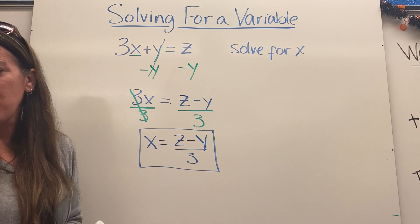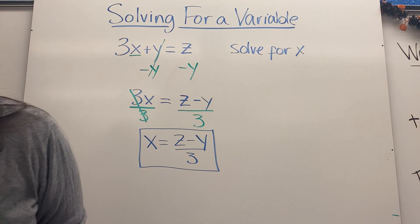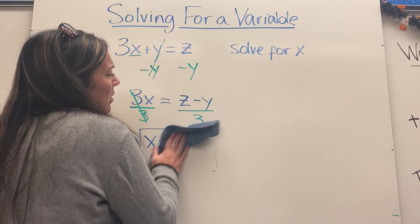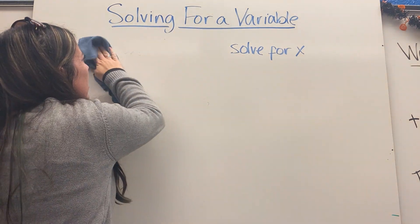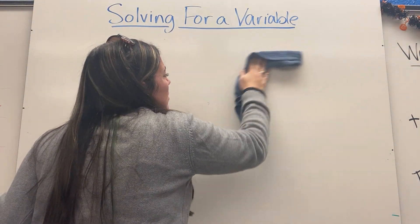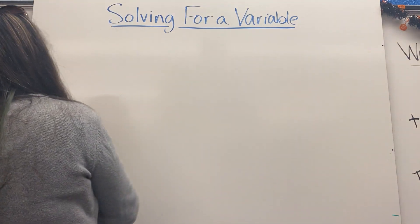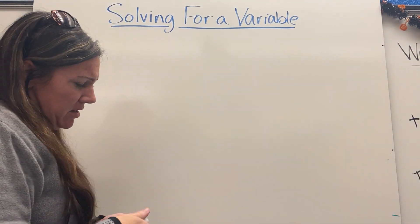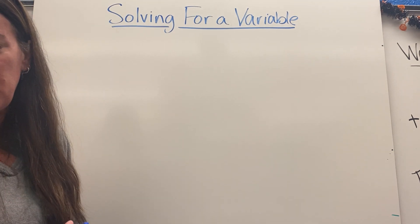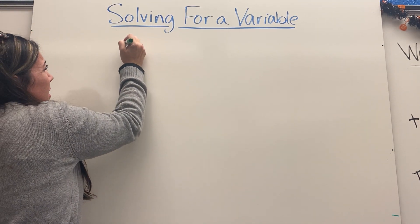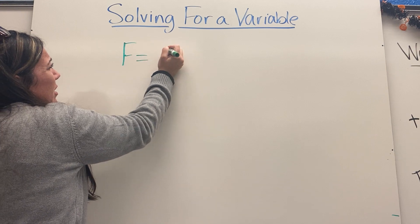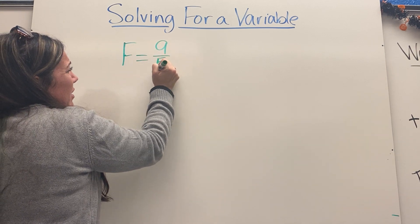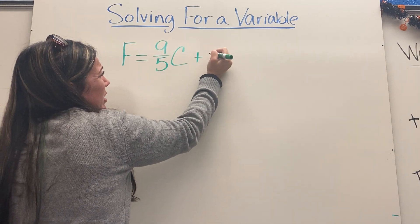Let's look at another example. We use this to rearrange formulas a lot, so a pretty common formula is that Fahrenheit equals nine-fifths of Celsius plus 32.